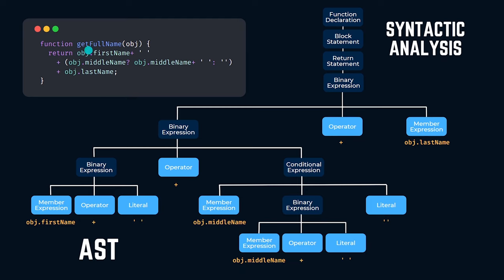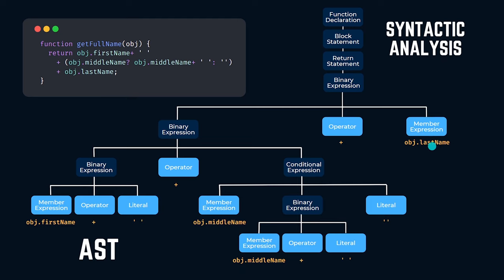Starting from the root node, the parser identifies this function definition as a function declaration. The body of the function is wrapped within curly brackets — what we call a block statement. Inside the function, we only have a return statement. Looking at the return expression, we have multiple operations. Inside the AST, we consider one operation at a time, so we have a binary expression — considering two operands at a time. The plus operator refers to a concatenation operation, with a member expression on the right accessing a property of the object.